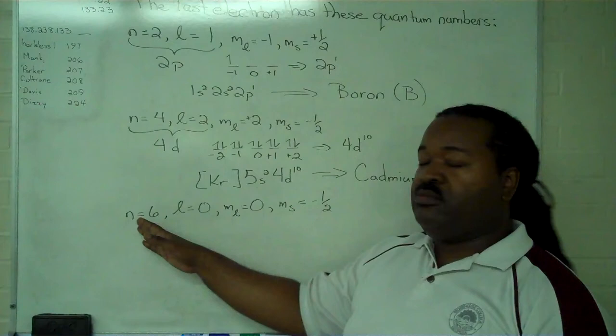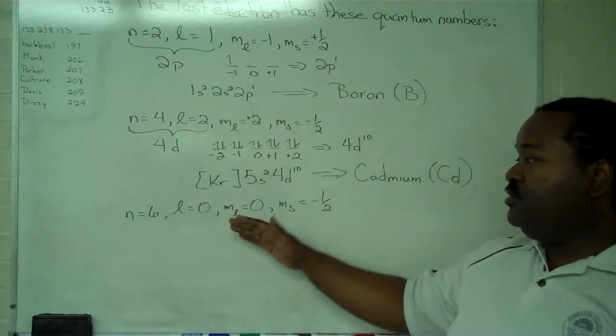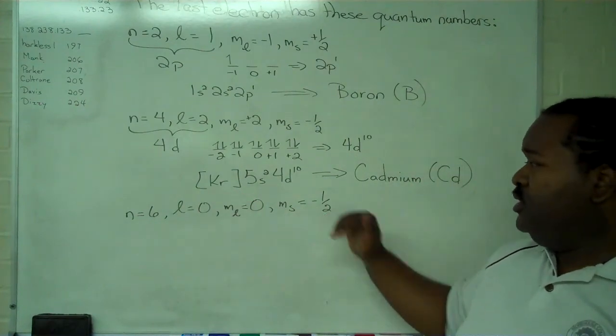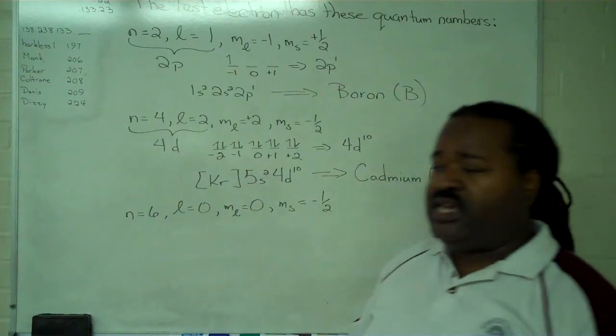So our final case, principal quantum number is 6, secondary is 0, magnetic is 0, and our spin is minus 1 half.